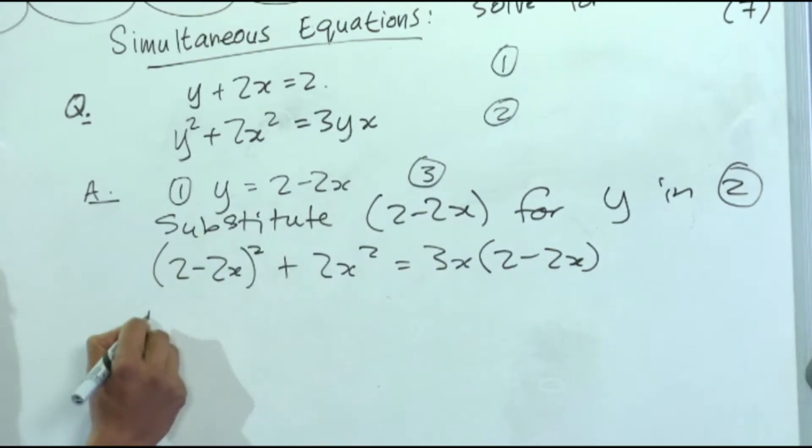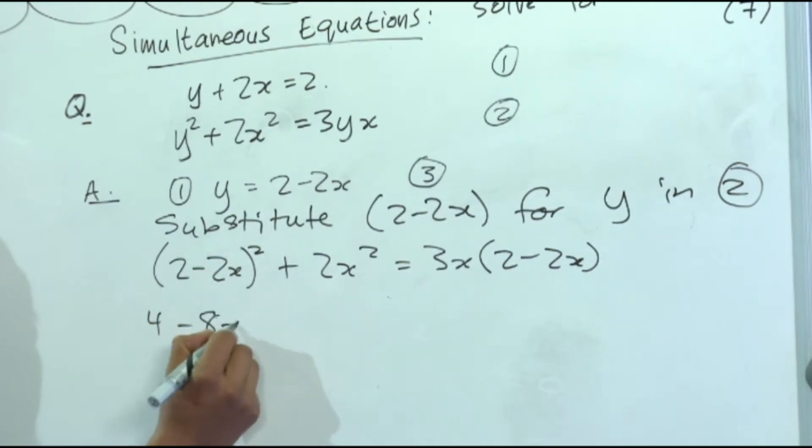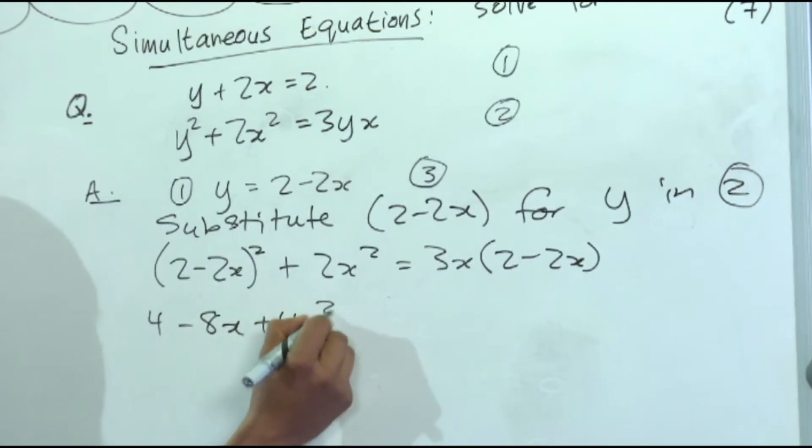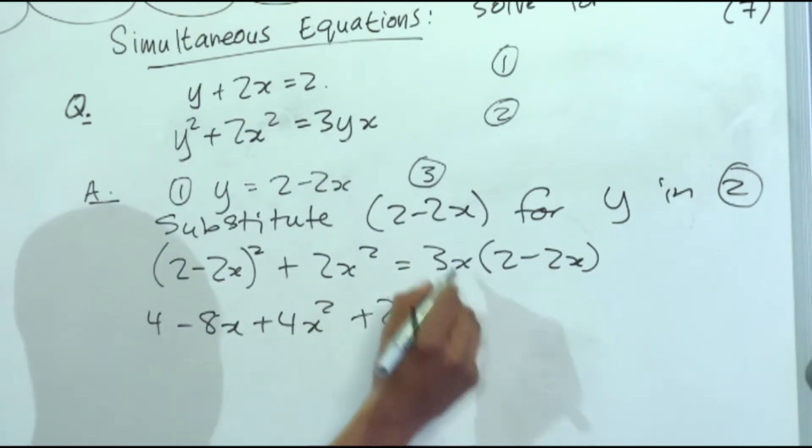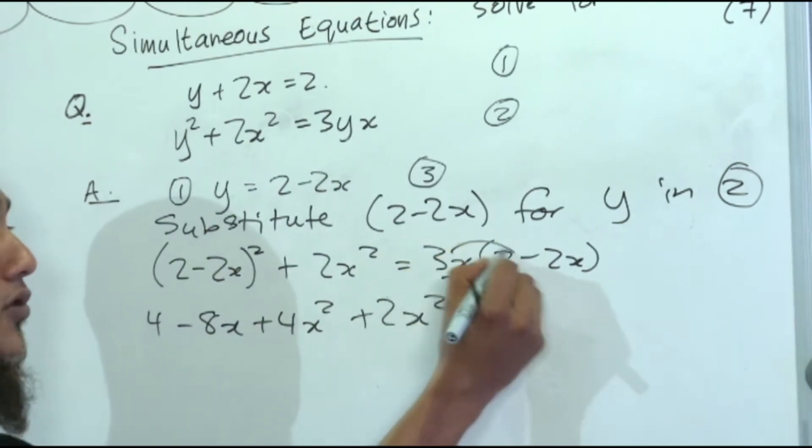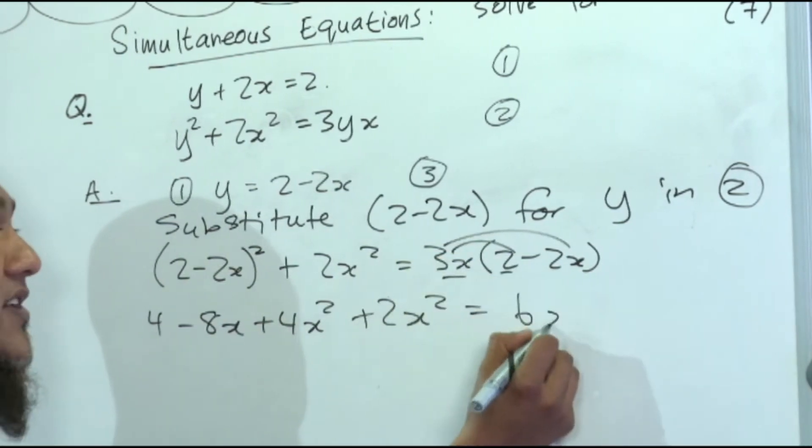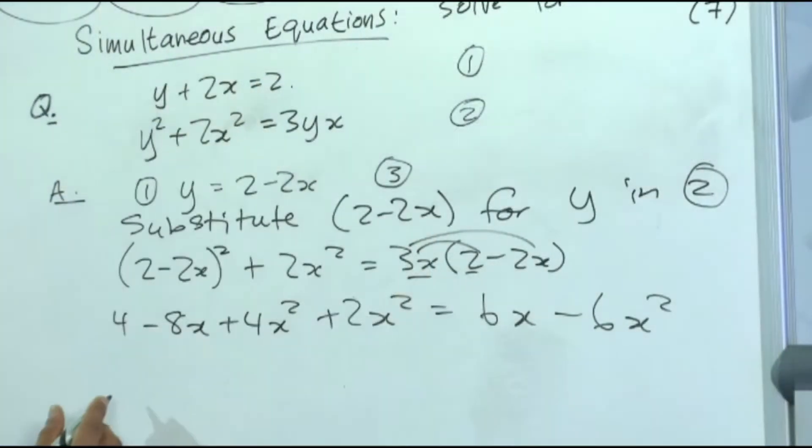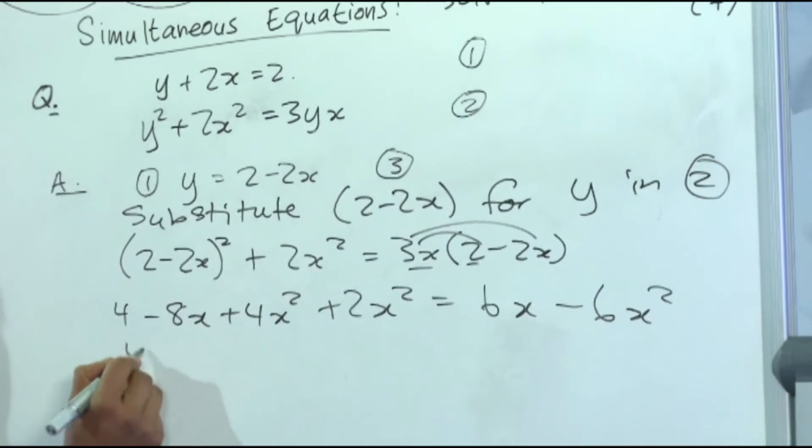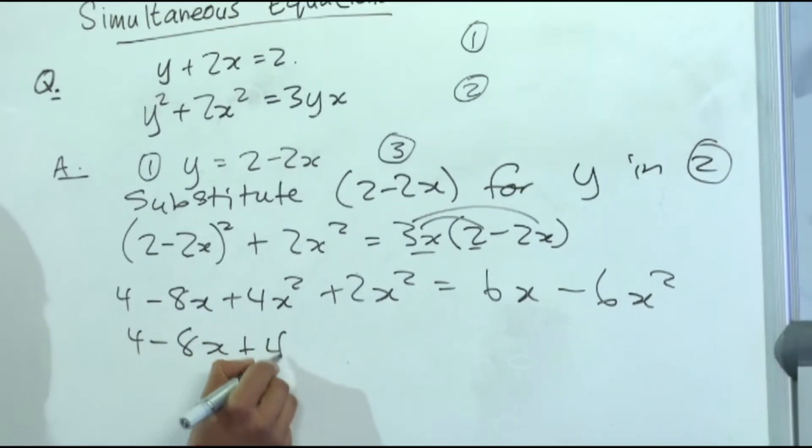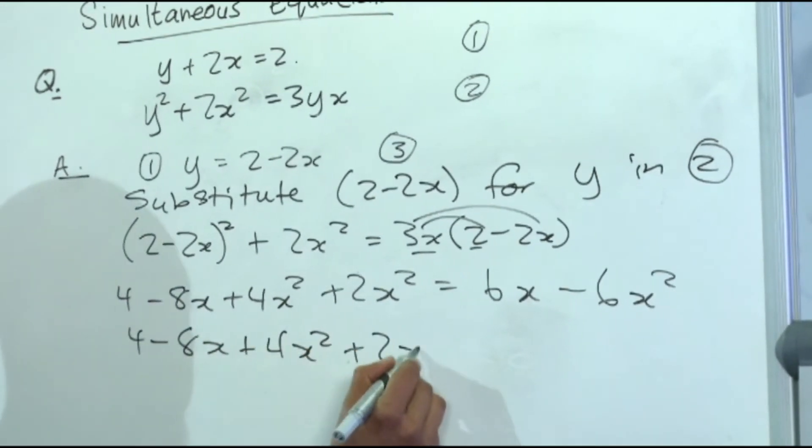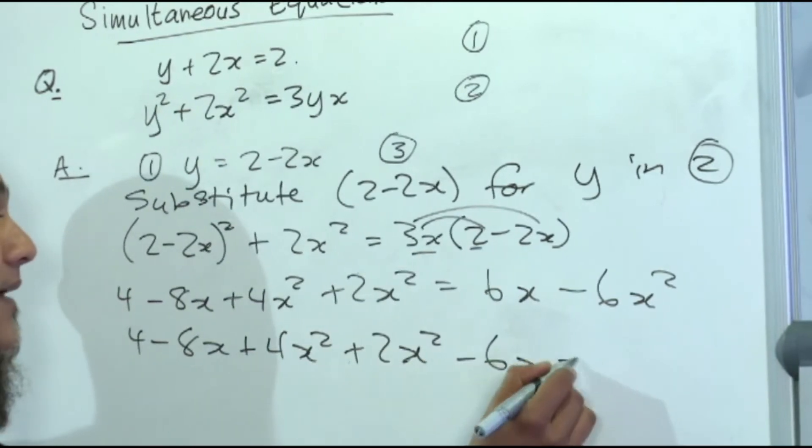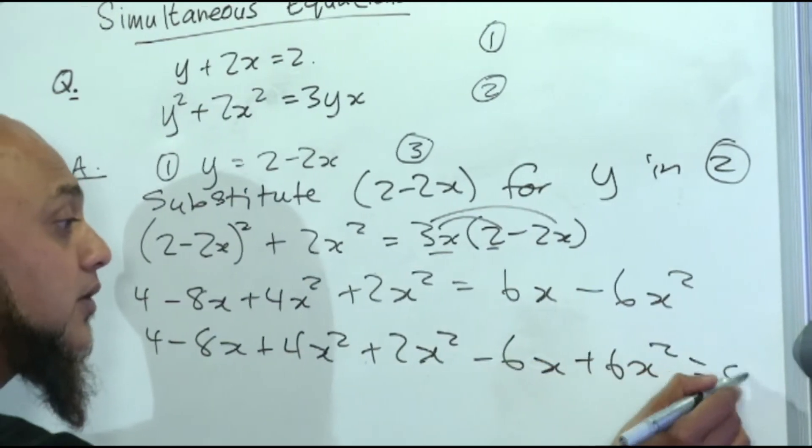So now remove the brackets. 2 squared, 4. Multiply minus 4x times 2, minus 8x, plus 4x squared plus 2x squared is equal to 3x times 2, 6x, minus 3x times 2x, 6x squared. Bring everything on the same side. What do I have?